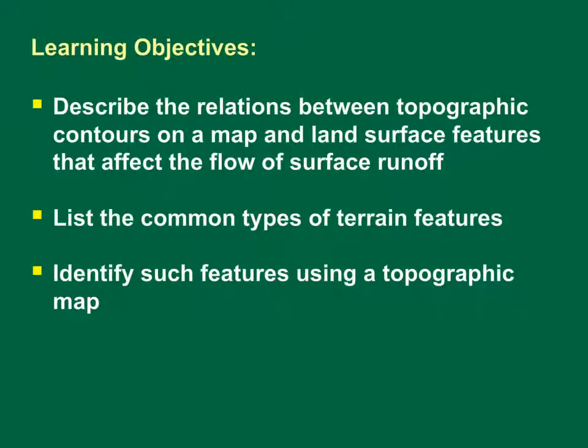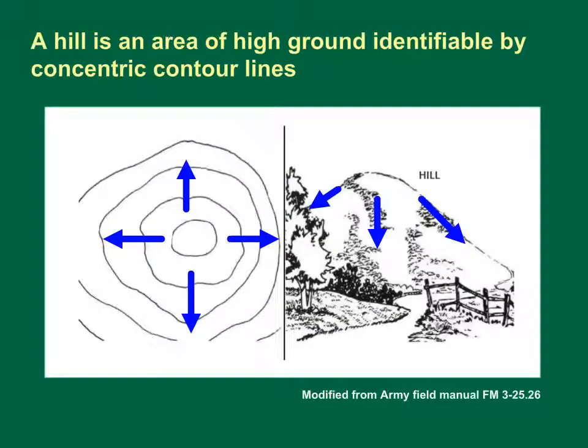This training module has three learning objectives. At the end of this module, you should be able to describe the relations between topographic contours on a map and the land surface features that affect the flow of surface runoff, list common types of terrain features, and identify such features using a topographic map.